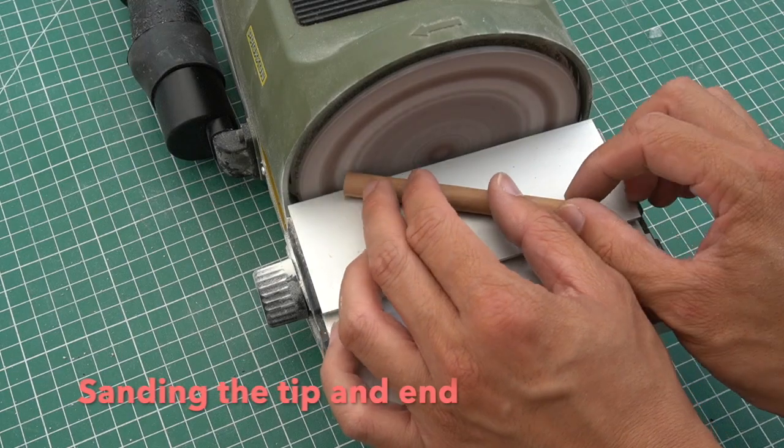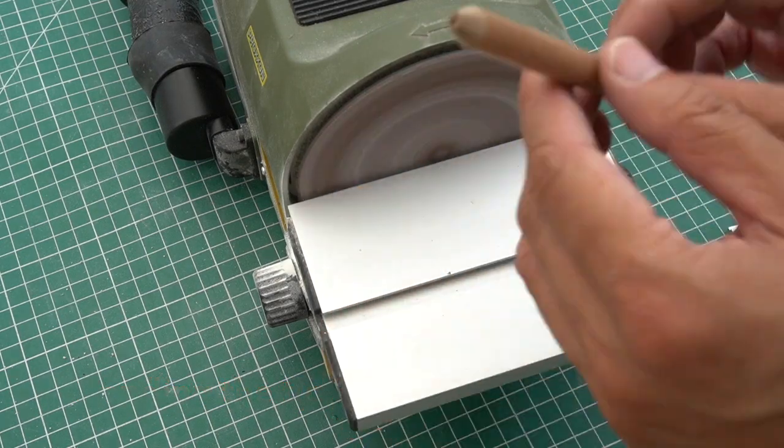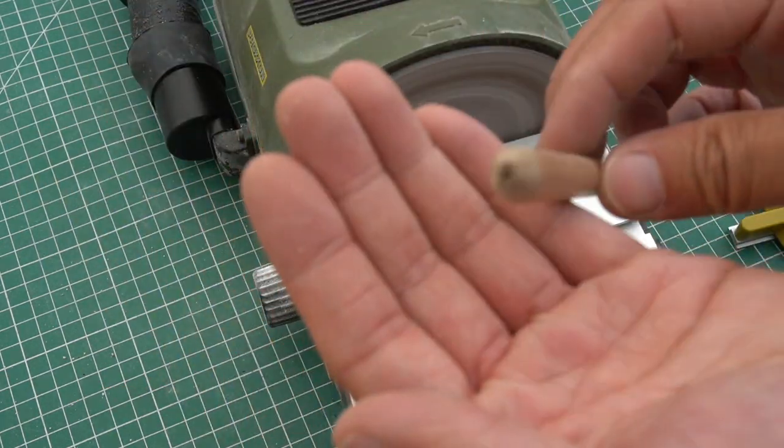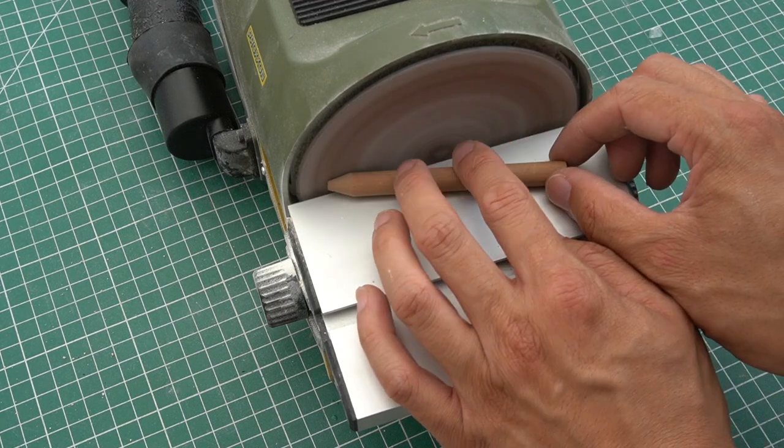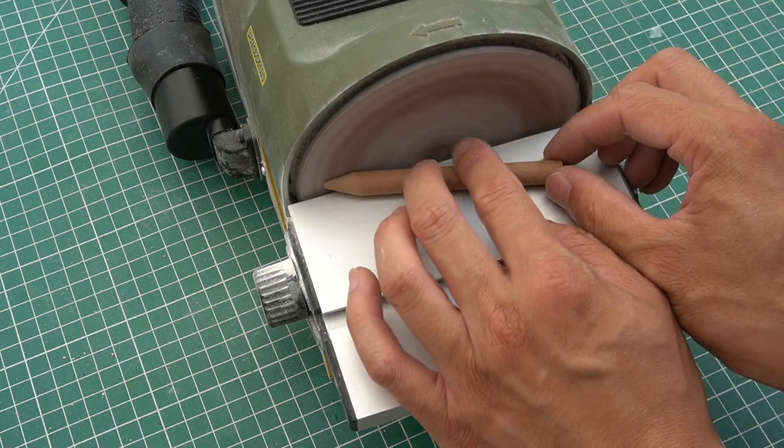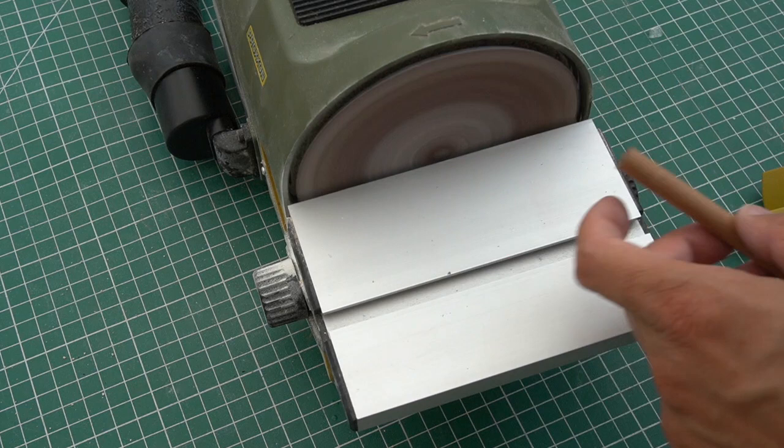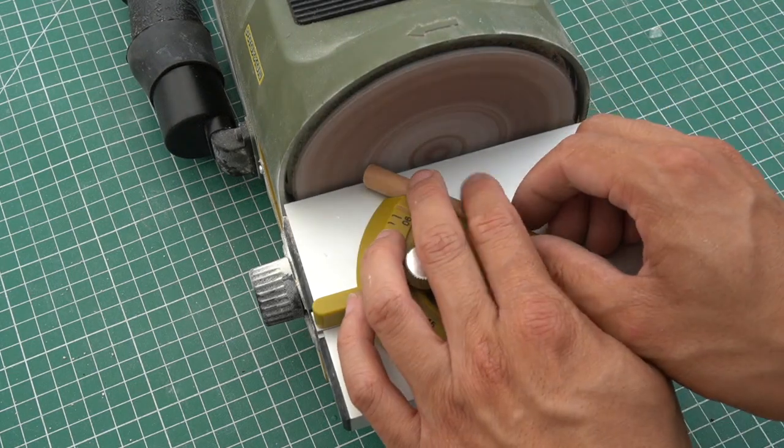With the disc sander now, carefully sand the handle so that it has a nice tip for the front. Mind your fingers and if necessary, sand the back and touch it up a little bit.